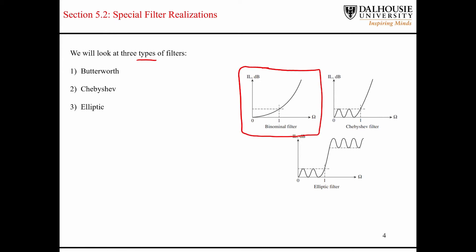The first frequency response shown here is the Butterworth filter type. A Butterworth filter is also referred to as a binomial filter, and it's also known as a maximally flat filter type. In the pass band of this low-pass filter prototype, it's completely flat, and it's also flat in the stop band.